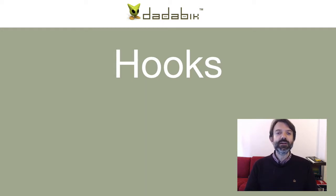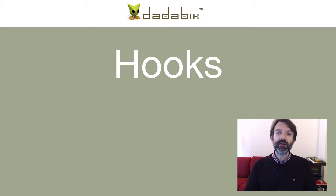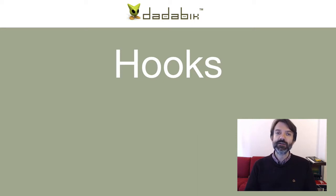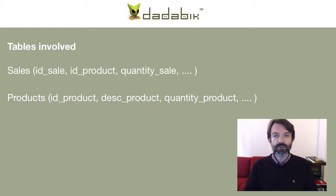Let's make a slightly more complicated example. Each time we register a sale in our application, we want to update the product quantity in our warehouse, and if the quantity is under a certain level, we want to send a low inventory warning message. Let's keep it simple: we have a sales table where each sale contains just one product, with fields for the product ID and the quantity bought.